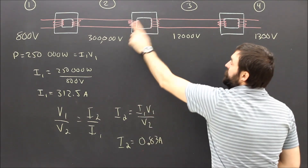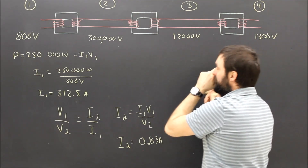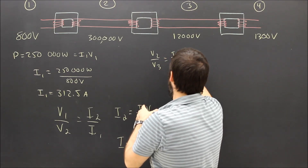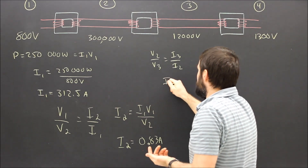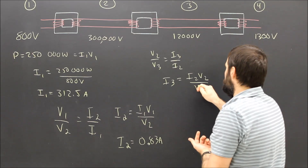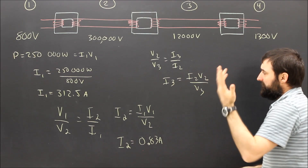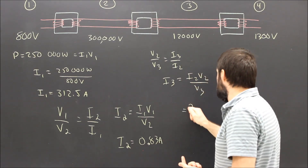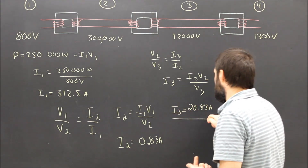What about after it goes through this transformer? So 300,000 volts at 0.83 amps goes in — what comes out? That's going to be V2 over V3 equals I3 over I2. Rearranging, we get I3 equals I2 times V2 over V3, which is just 250,000 watts divided by 12,000. That's 20.83 amps. And that is current three.